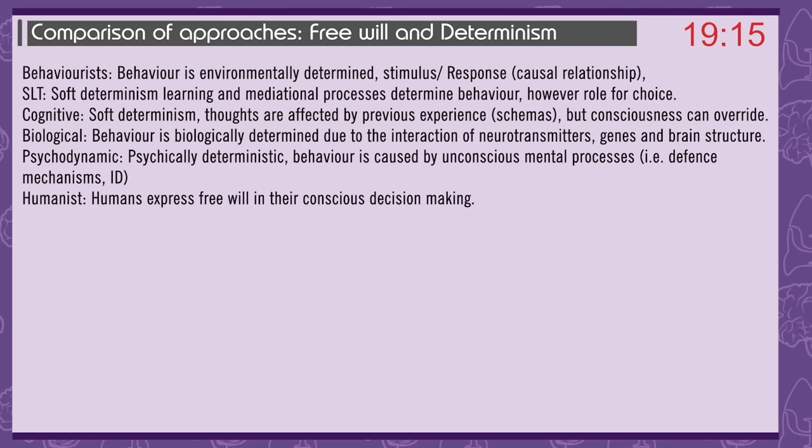Free will and determinism: behaviourist — behaviour is environmentally determined by stimulus-response links; social learning theory — soft determinism, learning and mediational processes determine behaviour but there is a role for choice; cognitive — soft determinism, thoughts are affected by previous experience and schemas but conscious thought can override; biological — behaviour is biologically determined due to the interaction of neurotransmitters, genes, and brain structure; psychodynamic — psychic determinism, behaviour is caused by unconscious mental processes such as defence mechanisms; humanist — humans express free will in their conscious decision making.